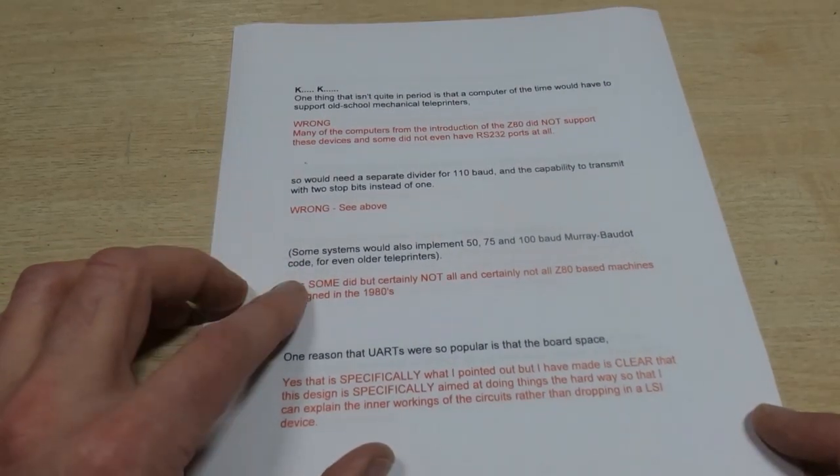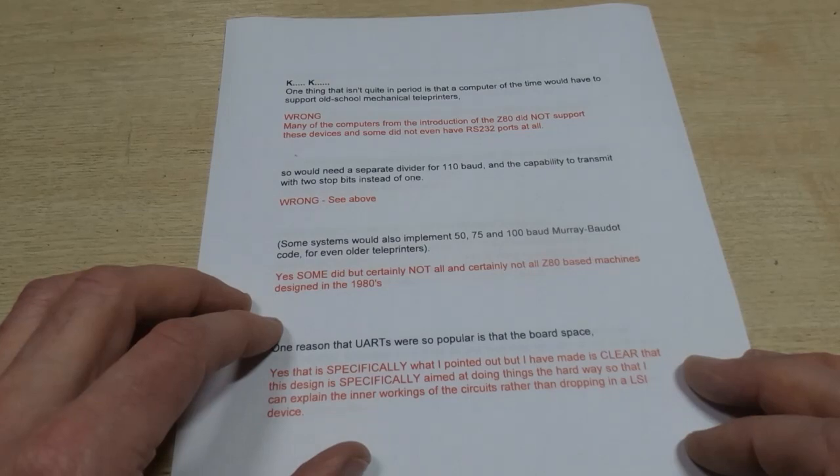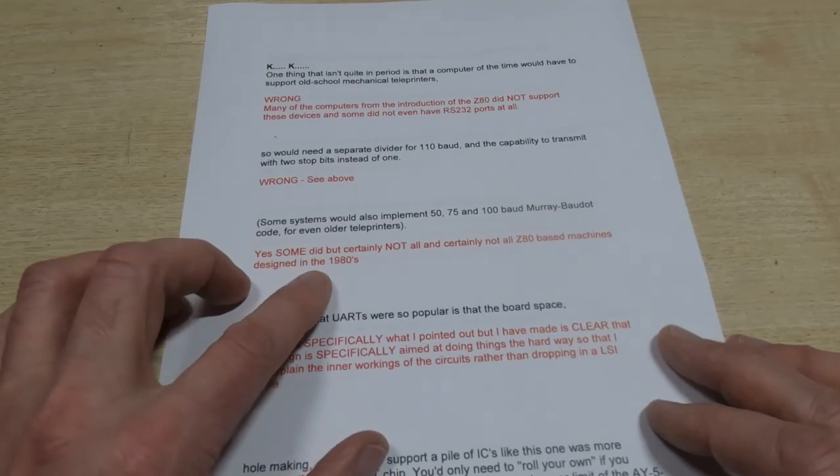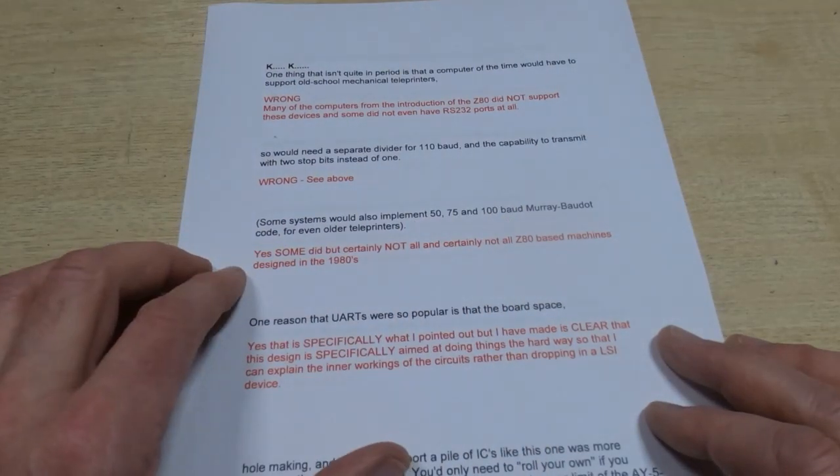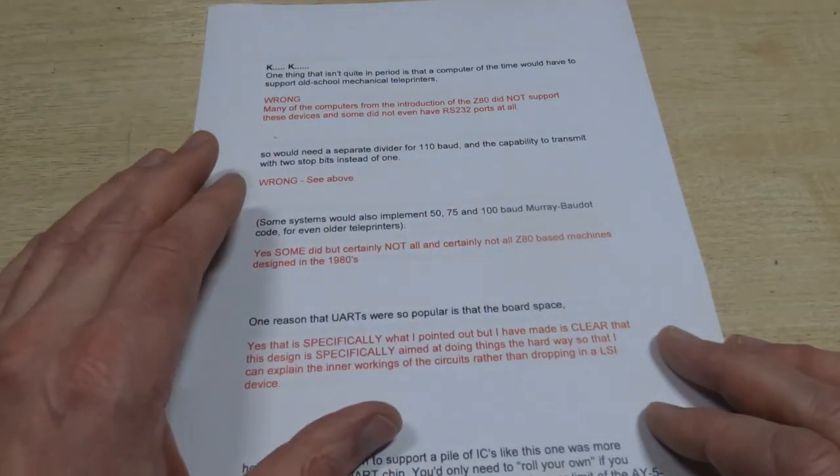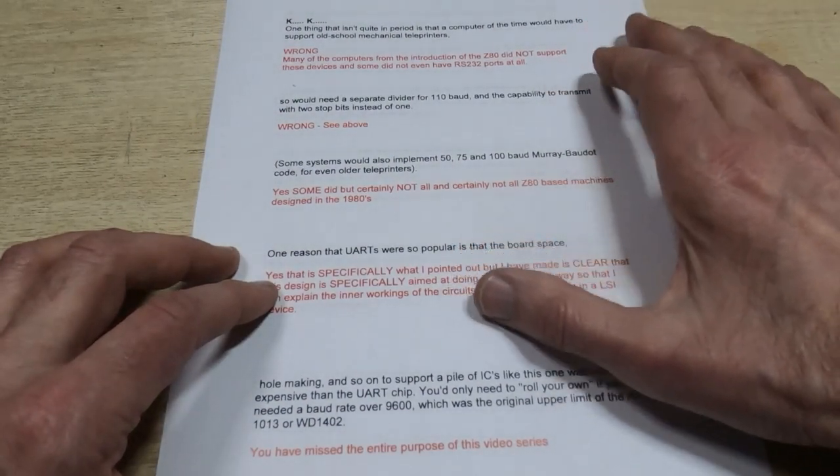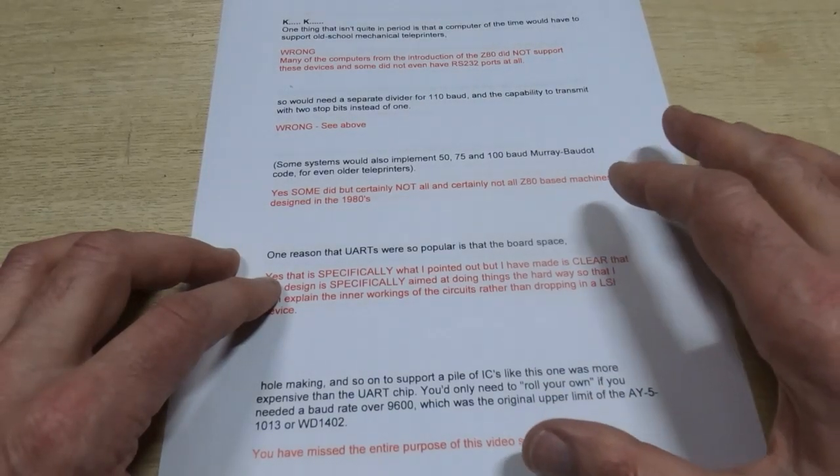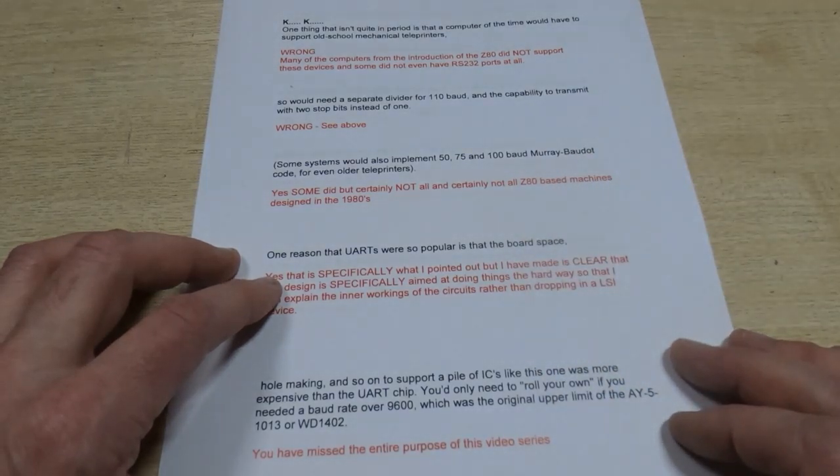Next point: some systems also implemented 50, 75, 100 baud. Yes, I think we mostly all know that. But again, some may have done, but absolutely certainly not all Z80-based machines designed in the 1980s supported this at all, let alone this range of baud rates. So again, completely irrelevant and got absolutely nothing to do with our project. Remember what we're trying to do here is design a Z80-based machine in a similar way to the way a machine would be designed in the 1980s, except that we're not using the large-scale integration devices.